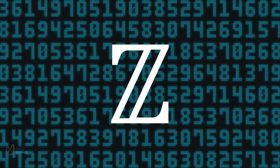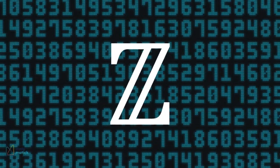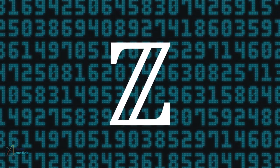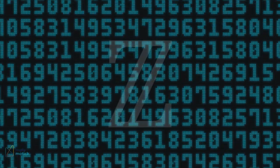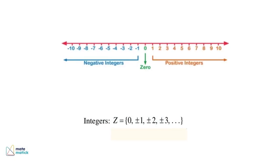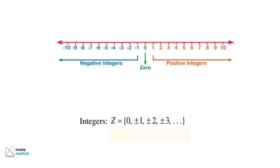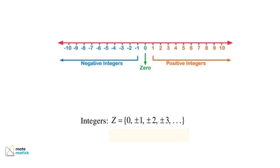Welcome to our exploration of the symbol Z and its fascinating history in the world of mathematics. The symbol Z represents the set of all integers: positive numbers, negative numbers, and zero. In mathematical notation, we write this as shown here.